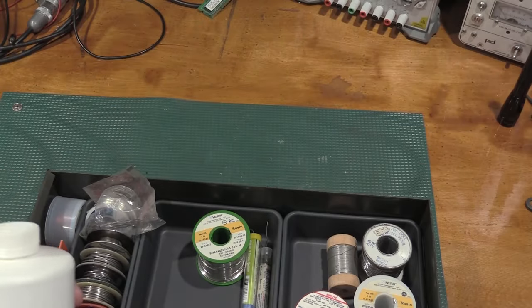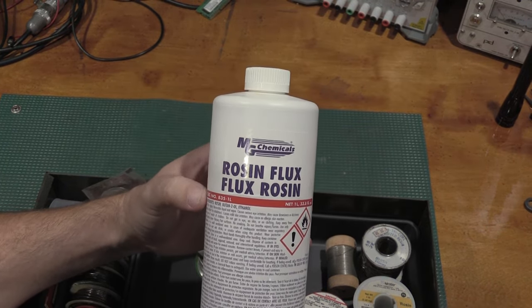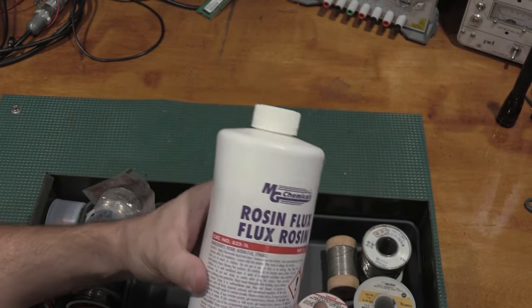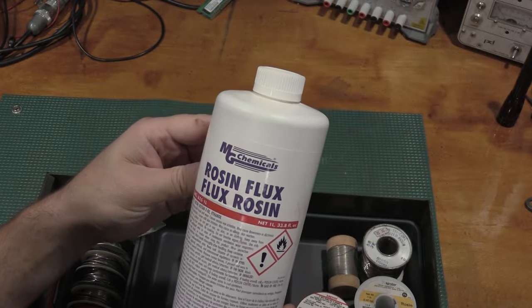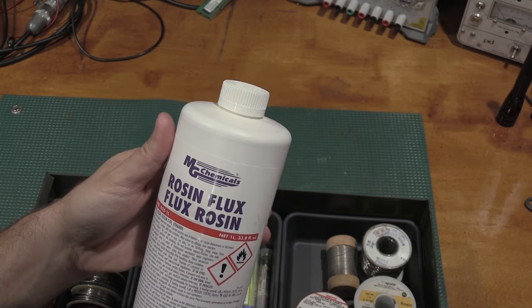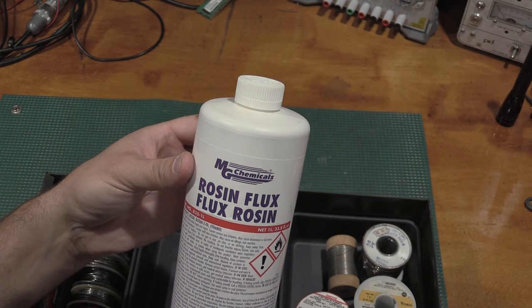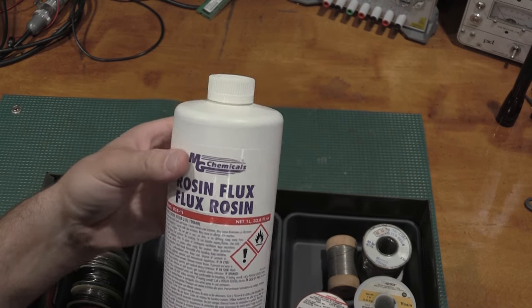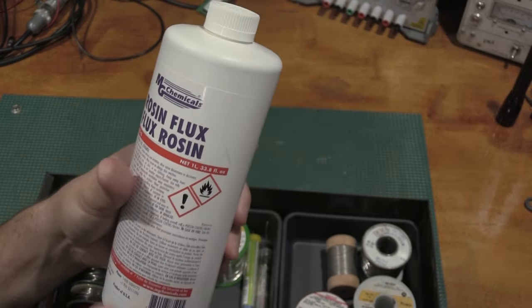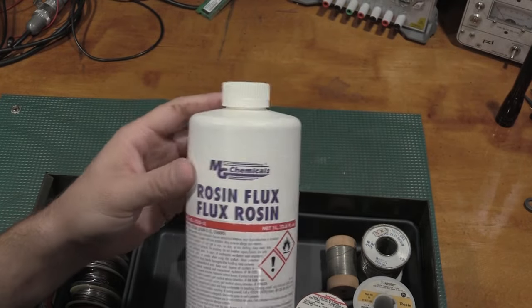I have not run into any situation where I have wanted to use acid flux for any reason in anything. I personally stay away from the acid flux. What I do use a bit of is MG Chemicals Rosin Flux. Do not buy a bottle larger than one liter. I bought this bottle years ago and I have barely touched it. The 835 is the chemical number. A bottle like this will last a long, long time.